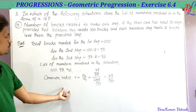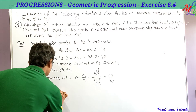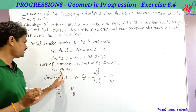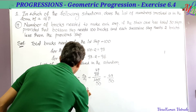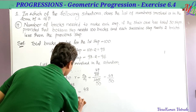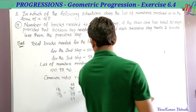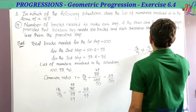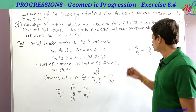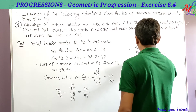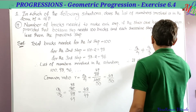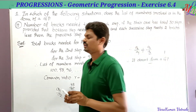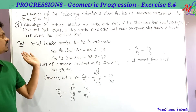Since a2/a1 = 49/50 is not equal to a3/a2 = 48/49, the common ratio is not equal. Therefore it does not form a GP.